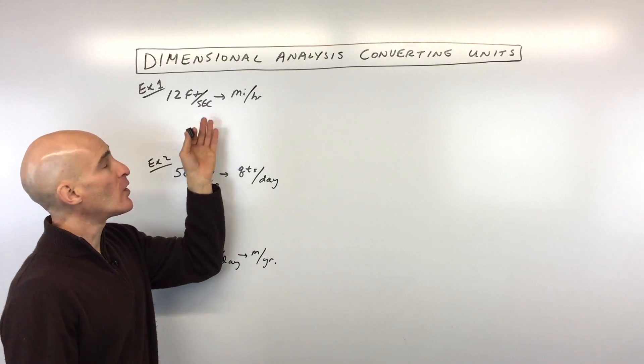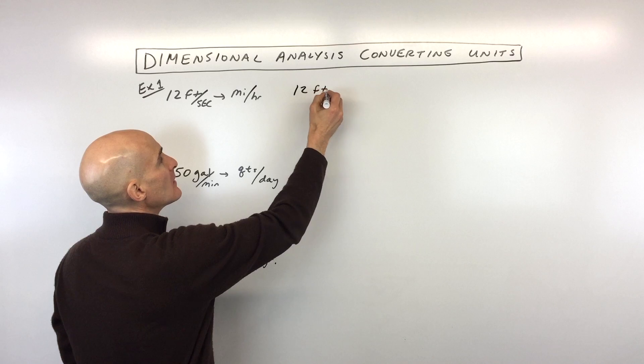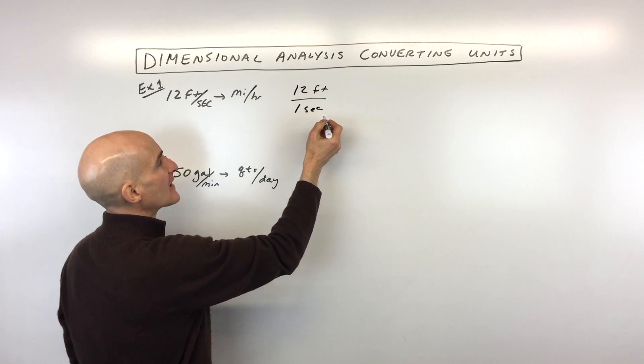Let's get into it. The first one, they give us 12 feet per second. So what you want to do is start with 12 feet. Per means divided by, so 12 feet divided by one second.